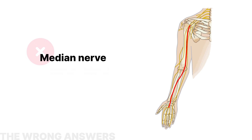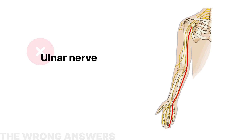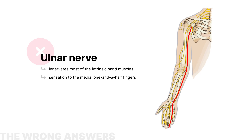The median nerve innervates most of the forearm flexors and some intrinsic hand muscles. It provides sensation to the first three and a half fingers, but it wouldn't usually be the cause of diminished elbow flexion or forearm supination. The ulnar nerve innervates most of the intrinsic hand muscles and provides sensation to the medial one and a half fingers. It's not typically involved in injuries related to elbow flexion or forearm supination.